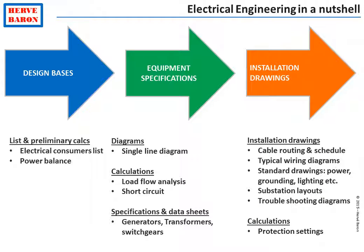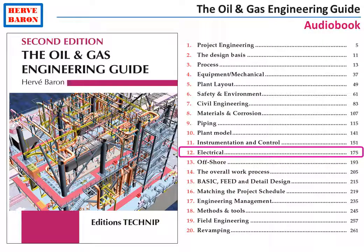This synoptic summarizes the work of the electrical engineer: it starts with the inventory of all electrical power consumers and calculation of overall plant power demand, then the electrical power distribution system is designed and distribution equipment is specified. Once equipment is ordered and vendor drawings received, all installation and wiring diagrams can be issued. This concludes the presentation of the work and deliverables of the electrical discipline. Thank you for your attention.